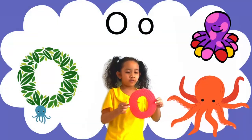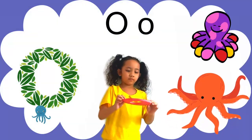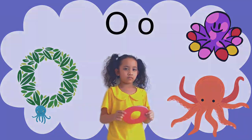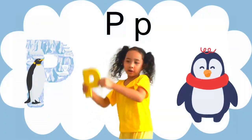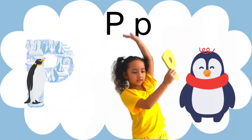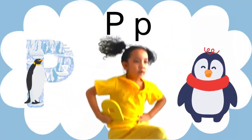O is for octopus, with tentacles to hold. P is for penguin, waddling in the cold.